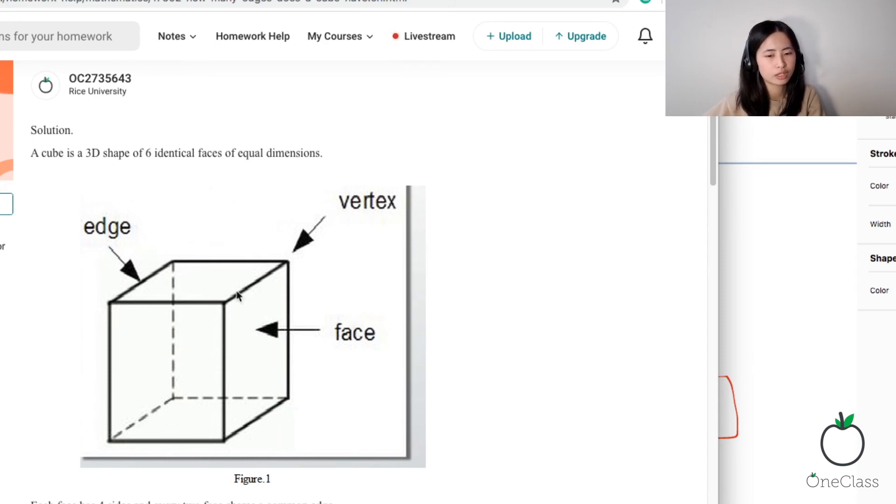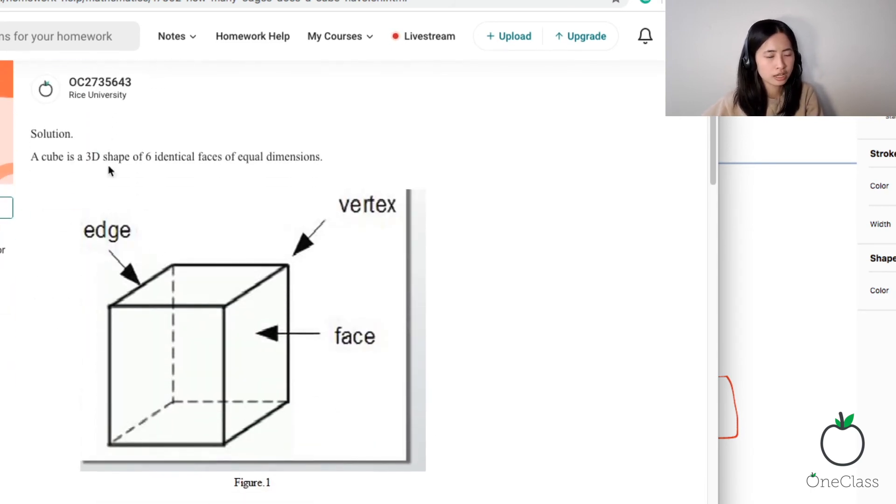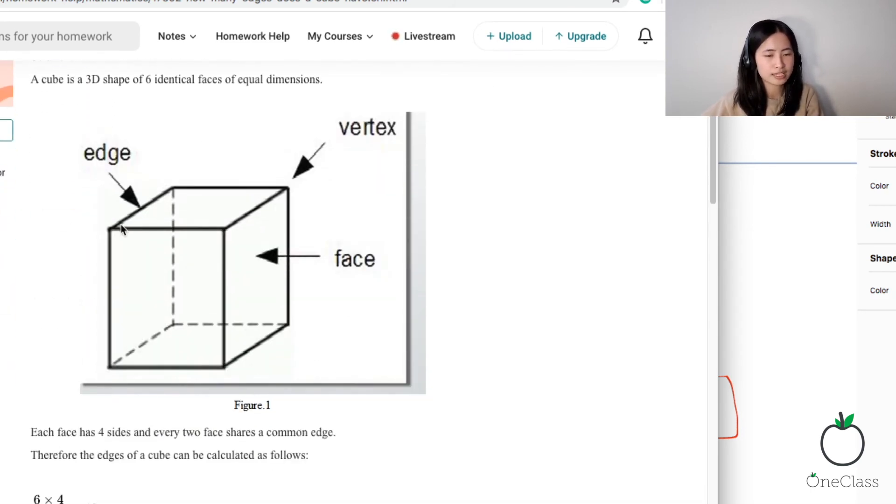So if you look at this cube over here, you're asking how many edges does a cube have. So basically all you have to do is draw a cube on a sheet of paper and then you count. So this is 1, 2, 3, 4, 5, 6, 7, 8, 9, 10, 11, 12. So that means there's 12 edges in a cube.